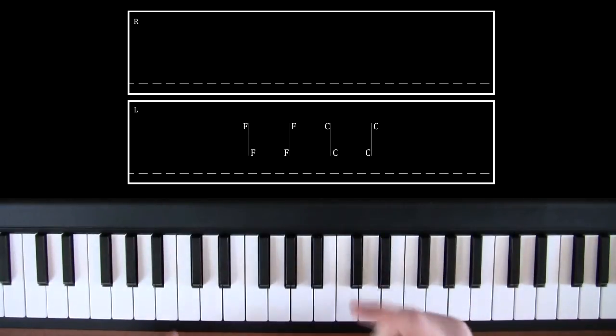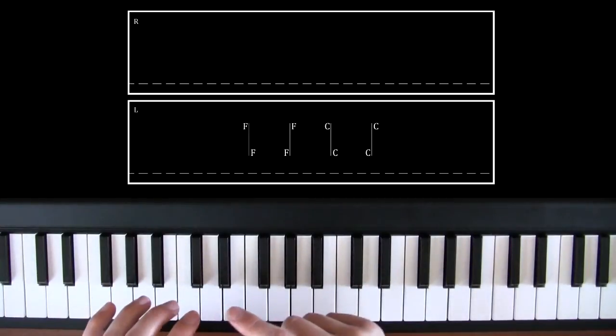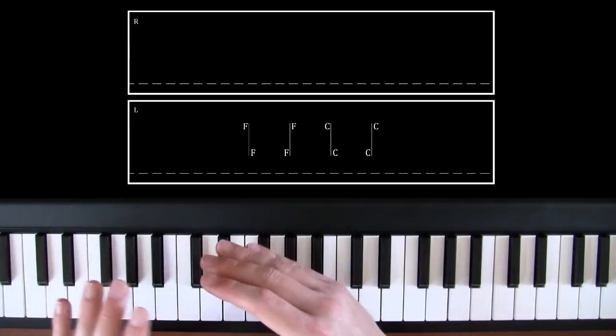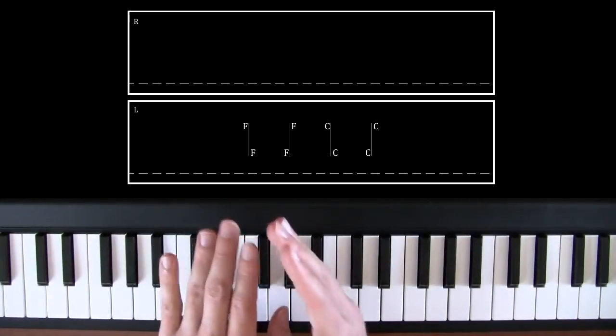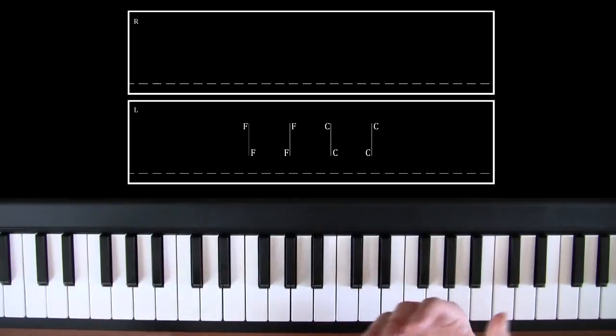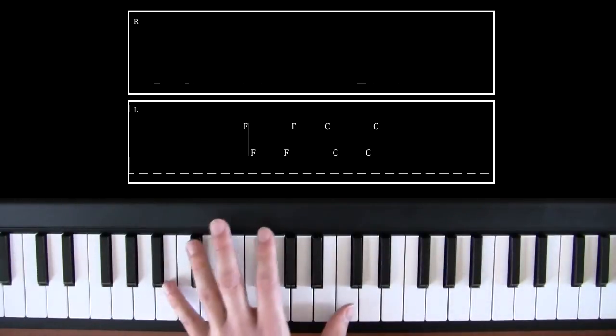We can see here 4 octaves, two of F and two of C. The line between them means that we have to play them in oscillation. We have to start the oscillation with the note on the left of the line.